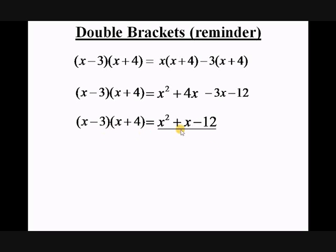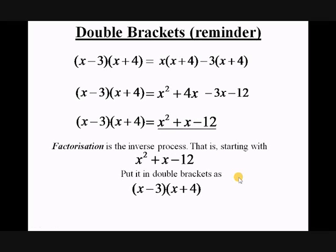These two expressions are equivalent and are both called quadratic expressions because they have an x² term. Factorization is the inverse process — starting with x² + x − 12, we put it into double brackets as (x − 3)(x + 4).